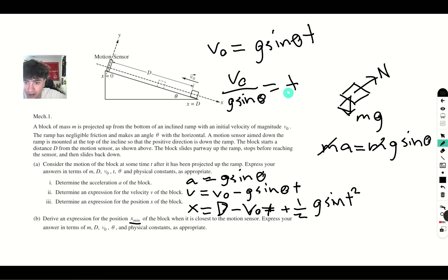So now let's plug this into our x equation to find x minimum. x min is equal to d minus v o t. So we'll get v initial squared over g sine theta.